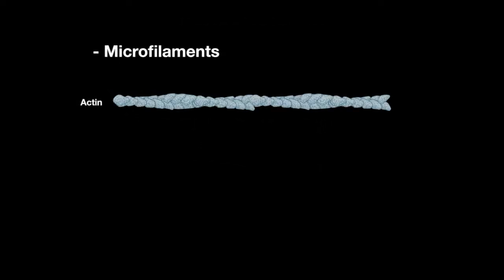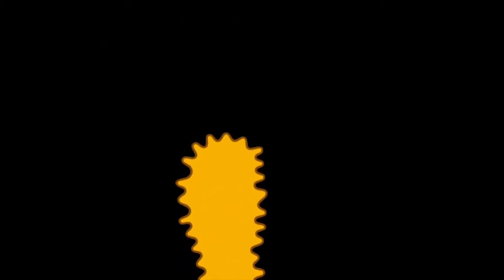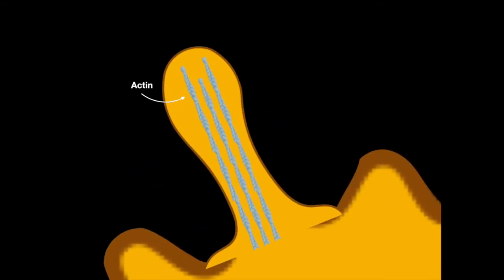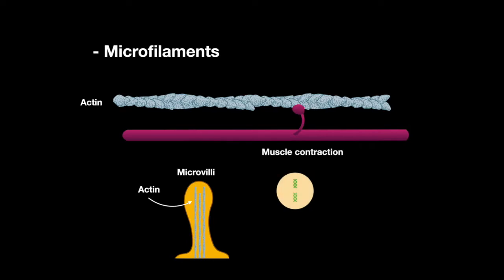Microfilaments are composed of actin, which make up the muscle and microvilli. They mainly function in muscle contraction and the pinching off that happens during cytokinesis.